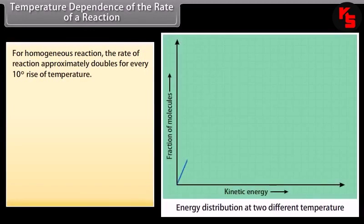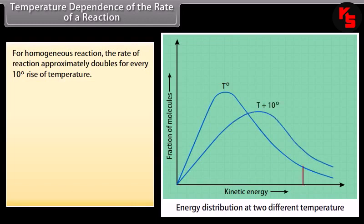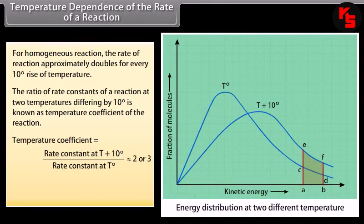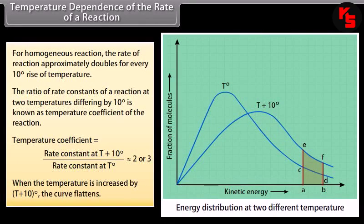For homogeneous reactions, the rate of reaction approximately doubles for every 10 degree rise in temperature. The ratio of rate constants at two temperatures differing by 10 degrees is known as the temperature coefficient. The value of temperature coefficient for most reactions is close to 2, and in some cases approaches 3. When temperature is increased by 10 degrees, the shaded area A-B-E-F represents the fraction of molecules having energy greater than the threshold energy.